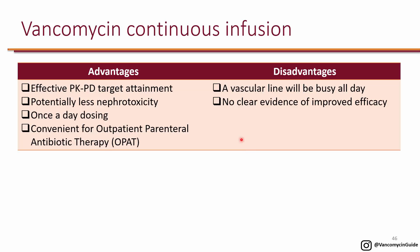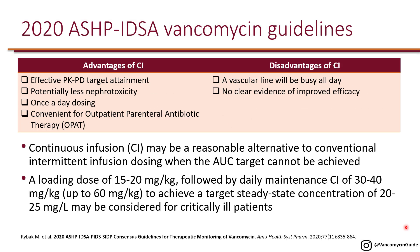There are advantages and disadvantages to continuous infusion. Advantages include effective PKPD target attainment, potentially less nephrotoxicity because you avoid high vancomycin peaks, and it becomes essentially once-daily dosing—you change the bag every 24 hours—making it convenient for outpatient parenteral antibiotic therapy (OPAT). Disadvantages include the vascular line being occupied all day, making it difficult to administer other medications, and studies have not shown clear evidence of improved efficacy over conventional intermittent dosing.